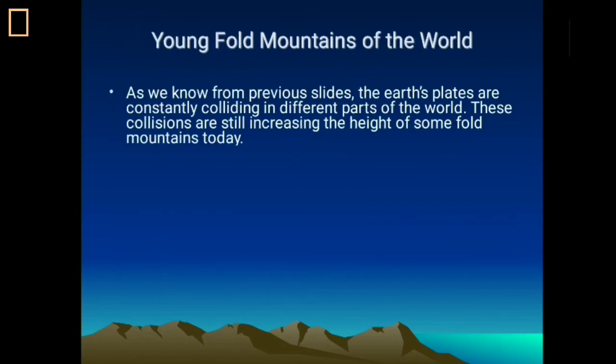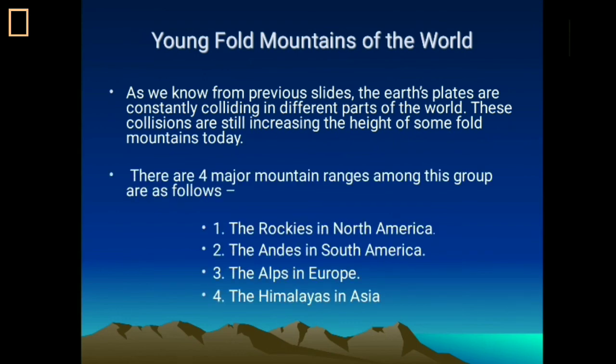Now, the young fold mountains of the world. There are two types of fold mountains: young fold mountains, where upliftment and formation are still ongoing, and old fold mountains. There are four major ranges of young fold mountains: the Rocky of North America, the Andes of South America, the Alps of Europe, and the Himalaya of Asia.